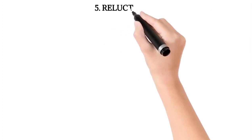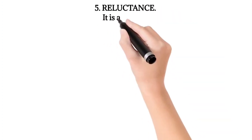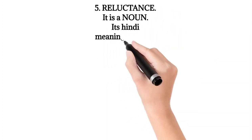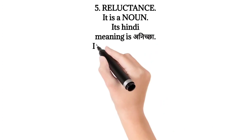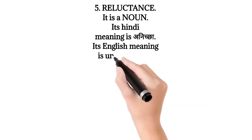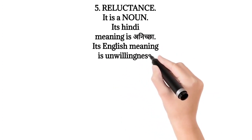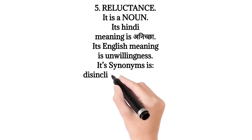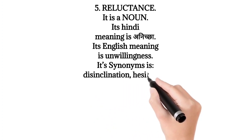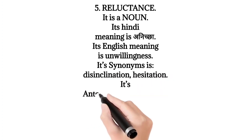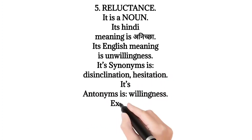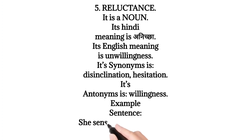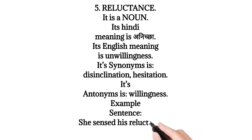5. Reluctance. It is a noun. Its Hindi meaning is Aniccha. Its English meaning is Unwillingness. Its synonyms are Disinclination, Hesitation. Its antonym is Willingness. Example sentence: She sensed his reluctance to continue.